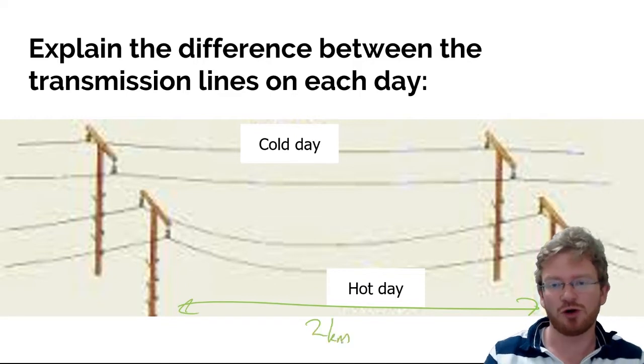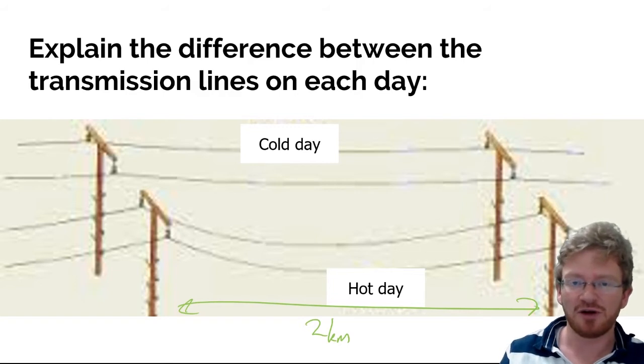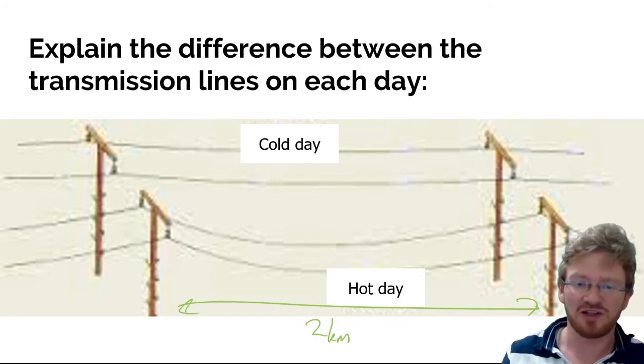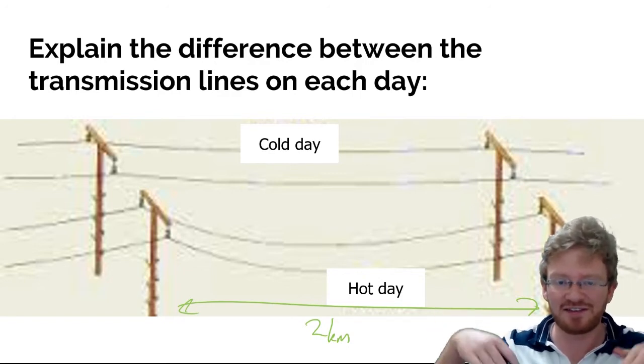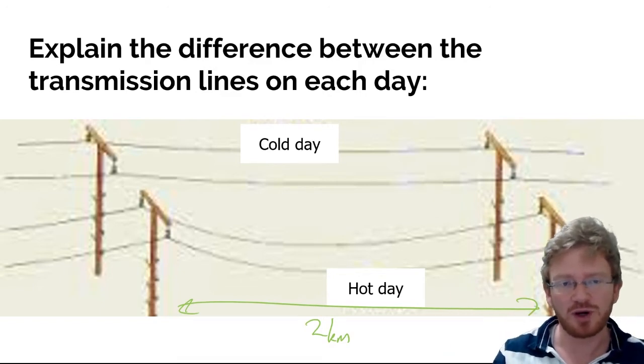And we look at them on a very cold day and a hot day. It probably wouldn't work in Malaysia because we don't have that much difference in temperature. But in countries like the UK and Canada, where it can go from 30 degrees in the summer to minus 10, minus 15 degrees in winter, you may well see this. So, on a hot day, they sag down and they droop. On a cold day, they're much tighter. So, why might that be?